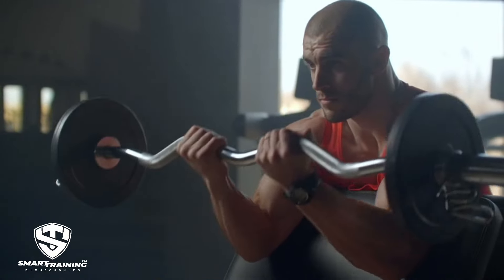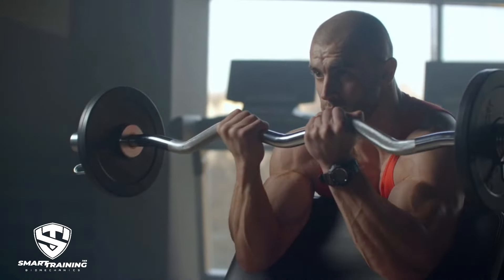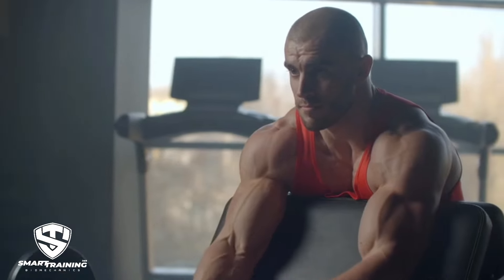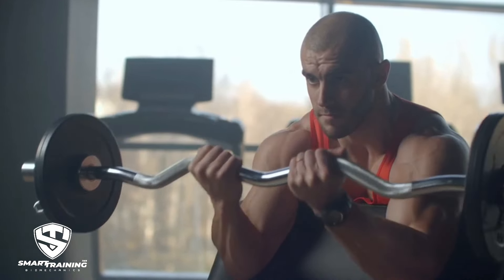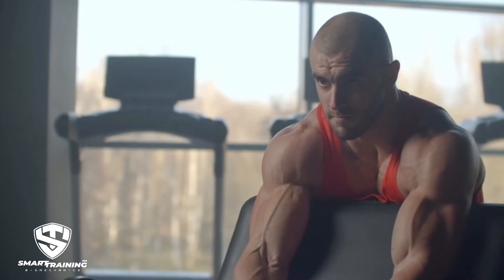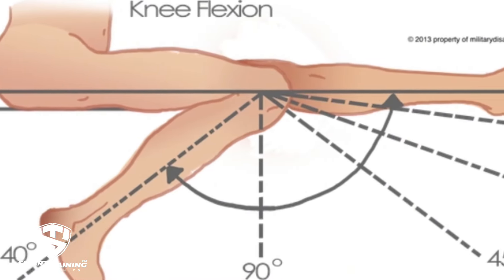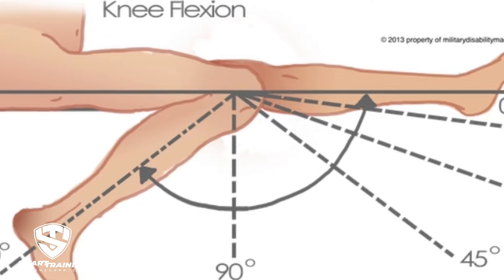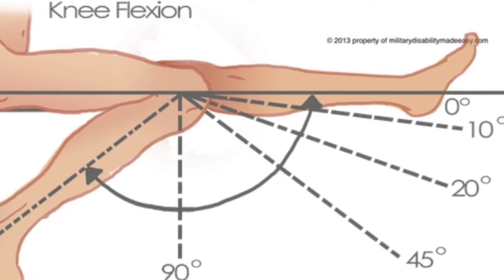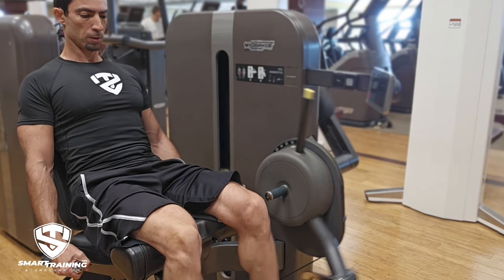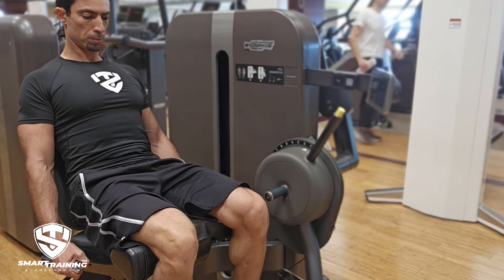Since dynamic muscle contraction automatically implies range of motion, we know that skeletal muscles have more strength potential when they are elongated versus when they are shortened or contracted. Therefore, it is reasonable to assume that the early part of the range of motion is more productive than the later part. As a rule, if one is going to abbreviate part of the range of motion, it's better to abbreviate the later part rather than the early part.